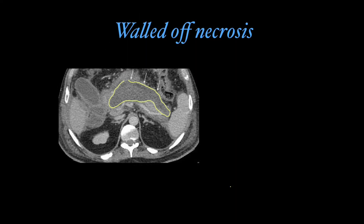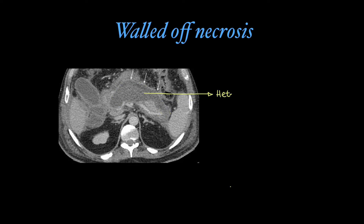Walled-off necrosis is a thick-walled collection with heterogeneous contents within, formed when the necrotic collection develops a wall after 4 weeks.